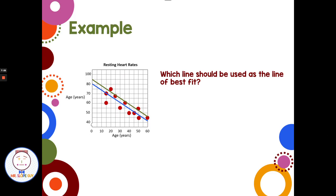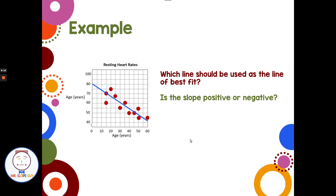Looking at a scatter plot showing resting heart rates — heart rate compared to age in years — the heart rate is decreasing as age increases. Which line of best fit should we use: the blue one or the green one? The blue one is better because it has about half the points above and half below. The green one was too high with too many points below it. The slope is negative — it's going down from left to right — and the y-intercept is 80.